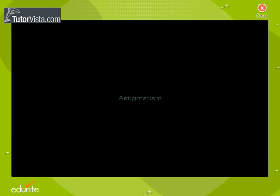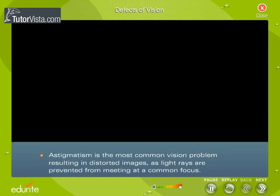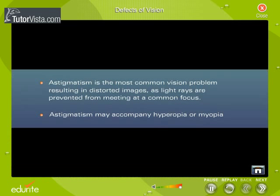Astigmatism is the most common vision problem, resulting in distorted images as light rays are prevented from meeting at a common focus. Astigmatism may accompany hyperopia or myopia.